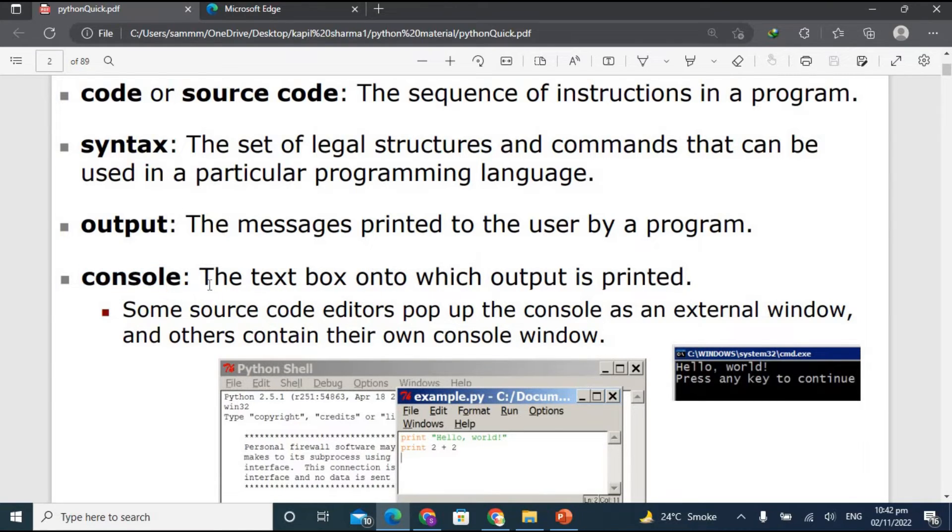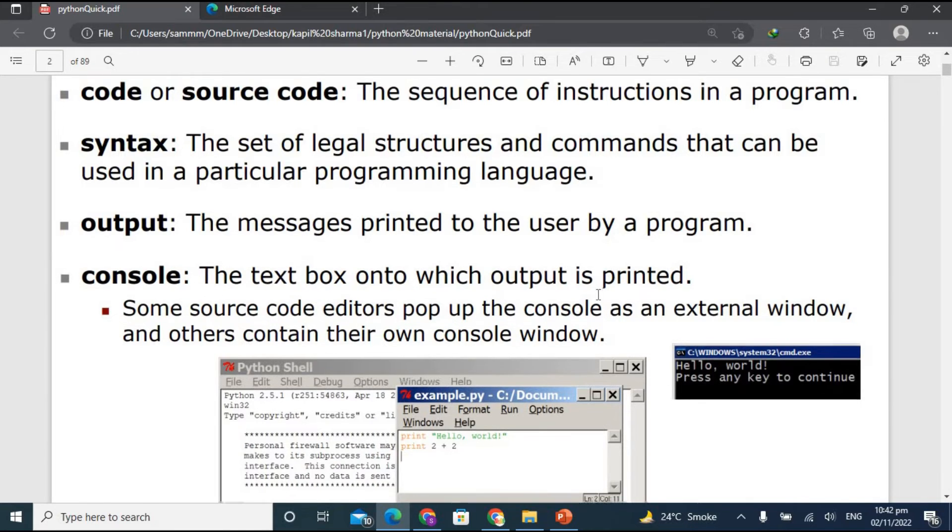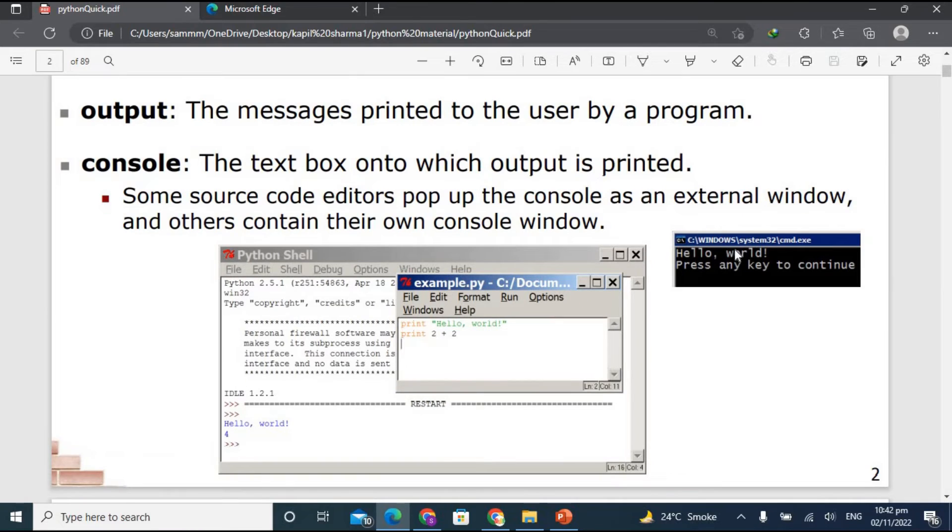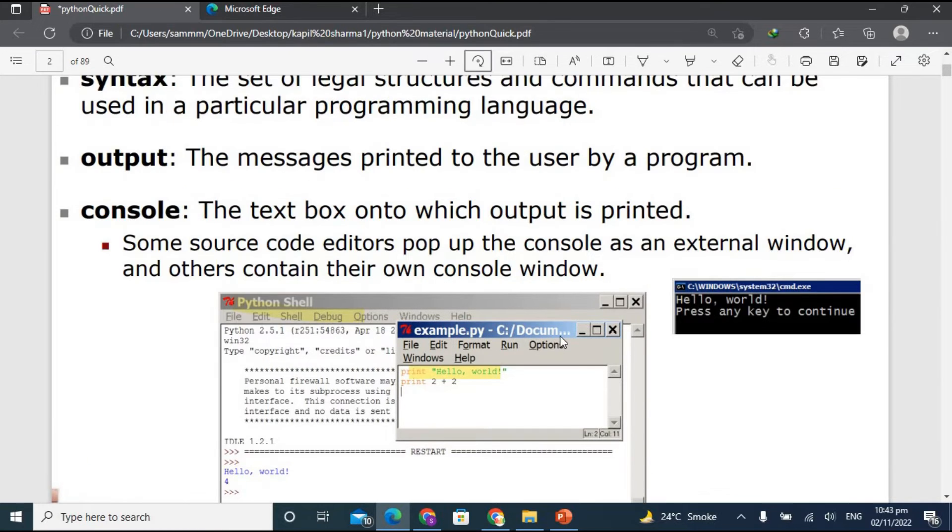So now what is console? The text box onto which output is printed. Let me show you, these are two examples of console. Command prompt is also called a console, and this is the Python shell and it is also called console. This is the code editor as you can see here.